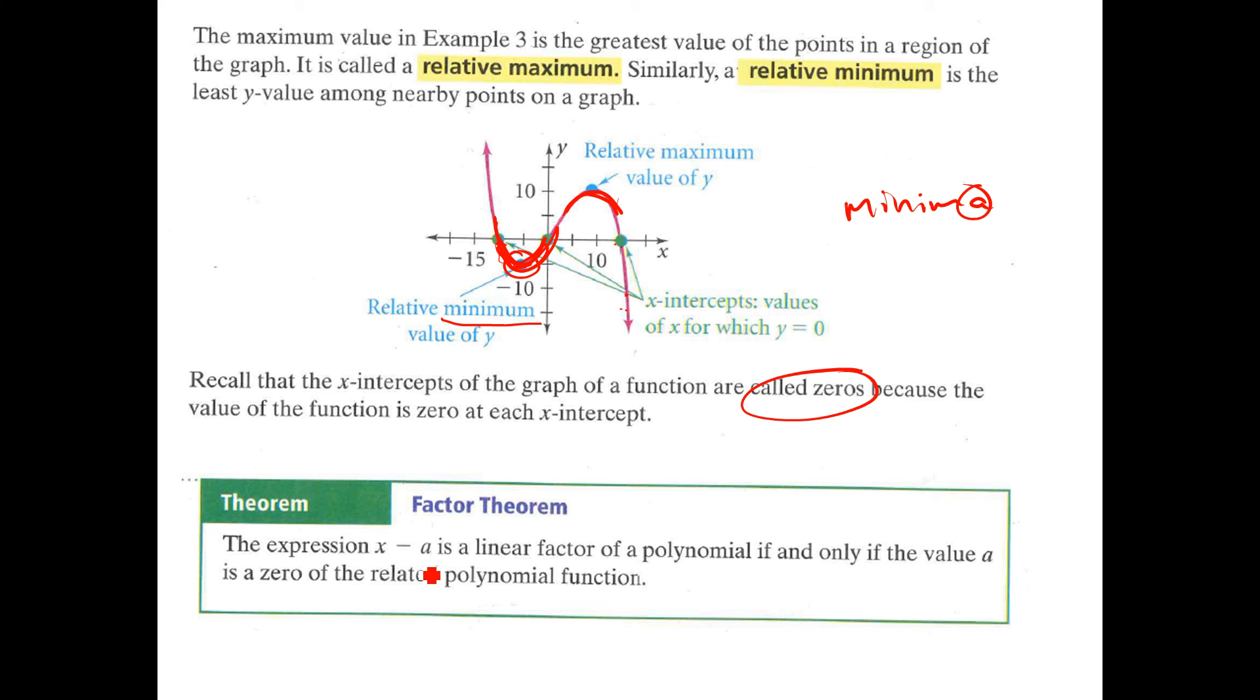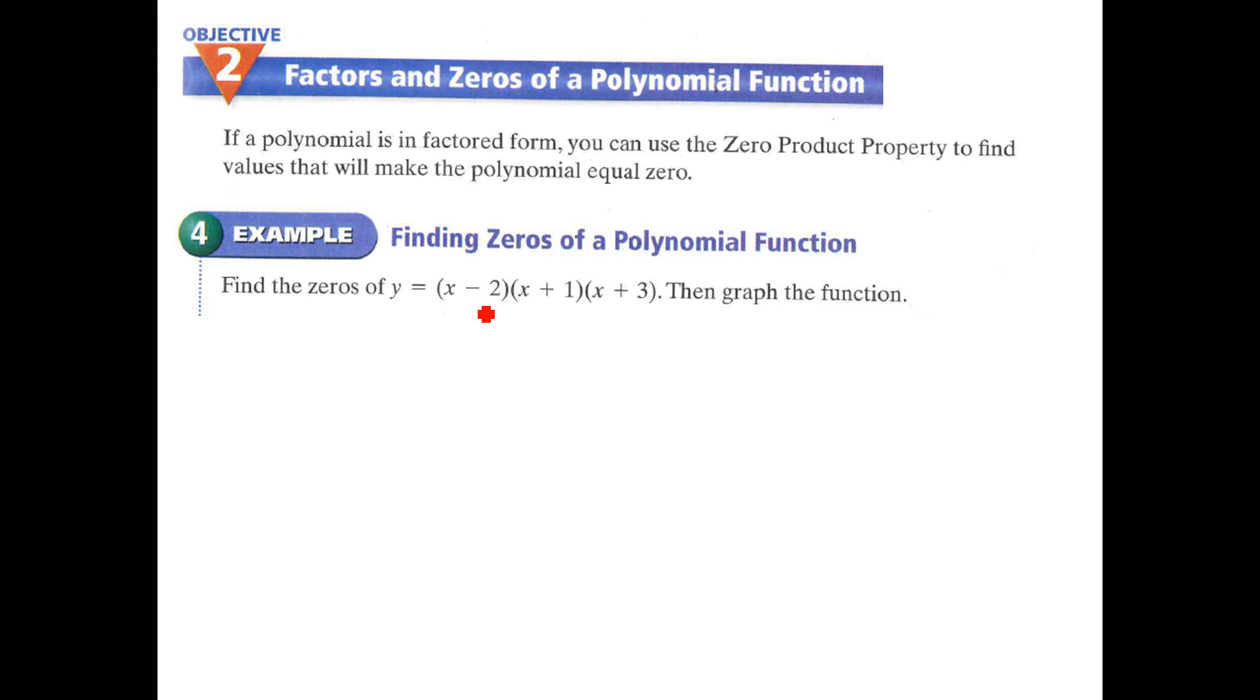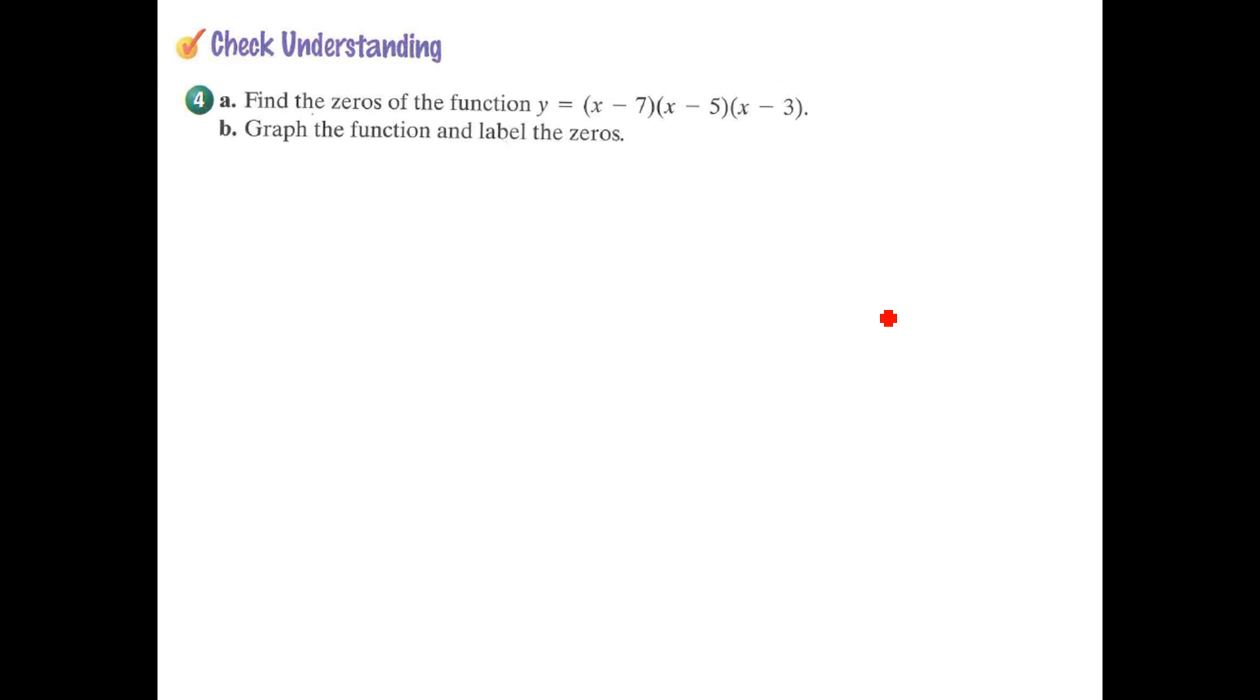So this is the factor theorem. This is important. The expression x minus a is a linear factor of a polynomial, which means that you can write it as a factor, if and only if the value of a is a zero. So if you cross the x-axis, you get to write it in the parentheses like this. Really helpful because we can do things like this. And the zeros of this, we know that a zero happens at two, the opposite, not negative two, negative one, the opposite, and negative three. If we were to graph this, negative one, it crosses here, negative three, it crosses here, and positive two, it crosses here. And since I know this is a positive out front, I know that it's going to start low and finish going up. Start down here in the negative and finish up here in the positive. If this was a negative out front, then the graph would look something like that. See if you can do problem for a and b.